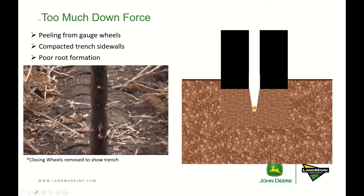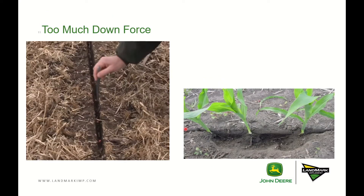With too much downforce, we can see peeling from the gauge wheels and poor root formation. The root is really compressed and will not be able to penetrate the soil as easily, requiring a lot more energy. When fertilizer is down, those roots definitely need to search for it. Too much downforce really inhibits growth from the get-go — roots just try to go down the actual seed trench instead of branching out as they should.